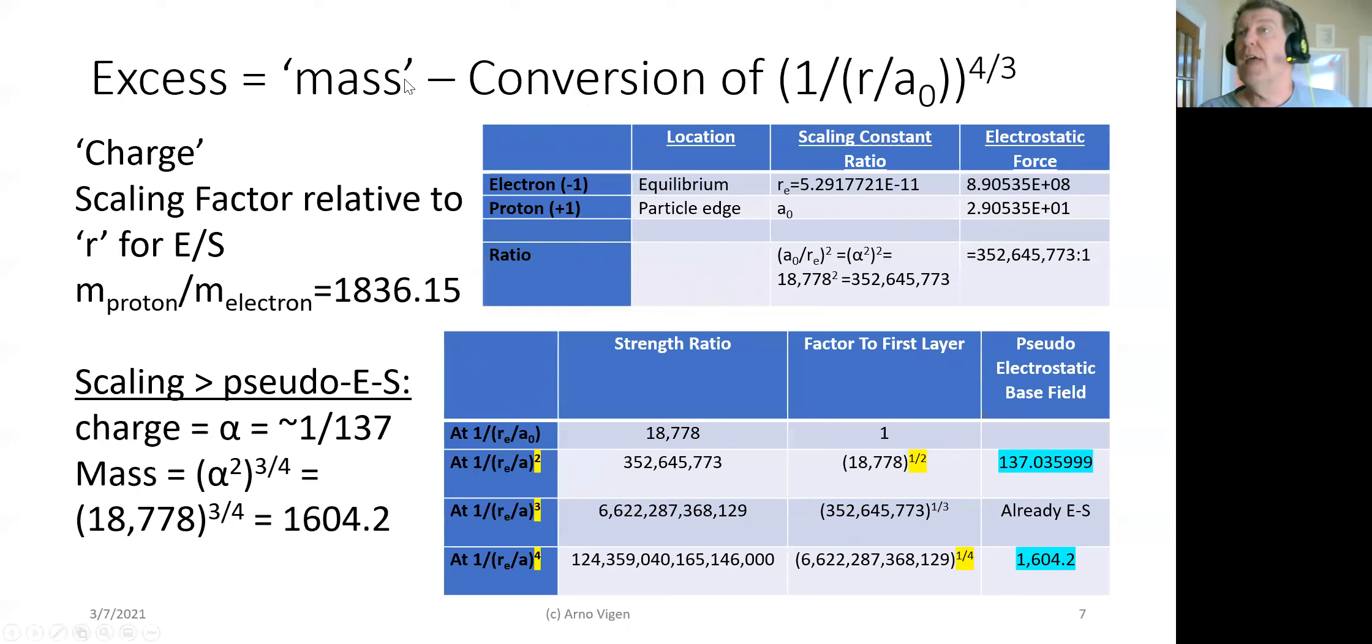So here's the actual calculation. We're calculating at r sub e and a sub o. There's those two calculations using Coulomb. And the difference is a ratio of 352,000. And that is r sub e squared, which is 1878. That's the direct ratio here squared is also that same number. That's the electrostatic.